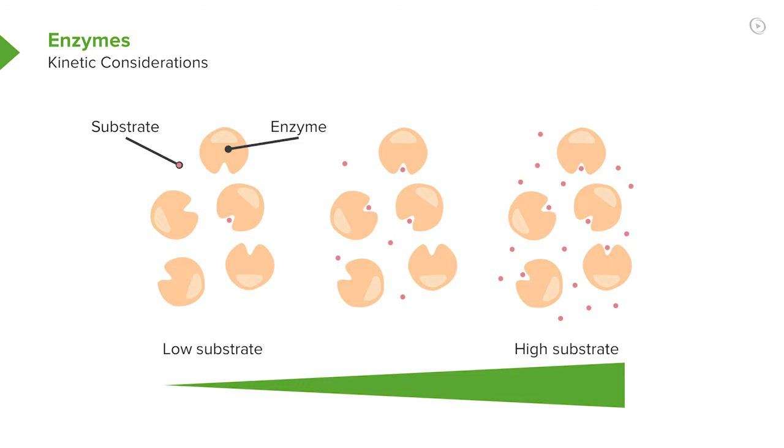And when we have a situation of high substrate, we notice here that every enzyme is bound to a substrate. And that's important because at high substrate concentrations, we have enzymes that are what we call saturated with substrate, meaning that once it has bound a substrate, made a product, and released it, almost instantaneously it grabs another substrate. It's not sitting around and waiting for things.